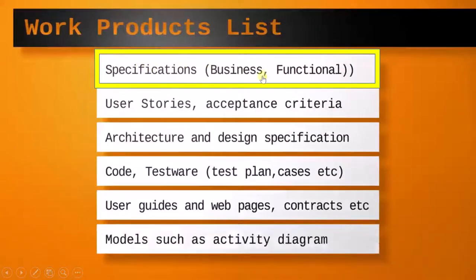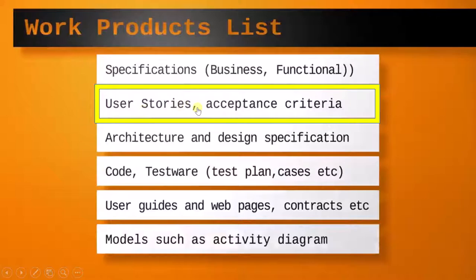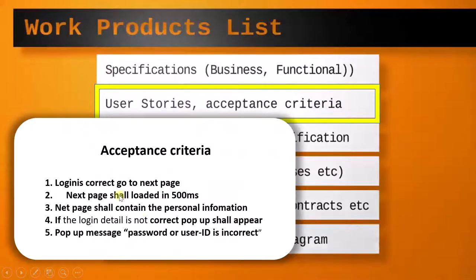This is what comes under specification, business requirement, or functional requirement. Now moving to user story or acceptance criteria. Suppose this is the acceptance criteria developed by a team member: login is correct, then go to the next page; next page shall load in 500 milliseconds; next page shall contain personal information; if login detail is not correct, a pop-up shall appear with the message 'password or user ID is incorrect.'